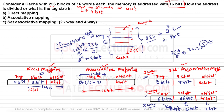In eight-way set associative, the tag is 7 bits. So you can see the pattern: as the set size increases — 2-way, 4-way, 8-way — the number of bits required to represent the tag also increases. This is the key difference between all three mapping techniques.